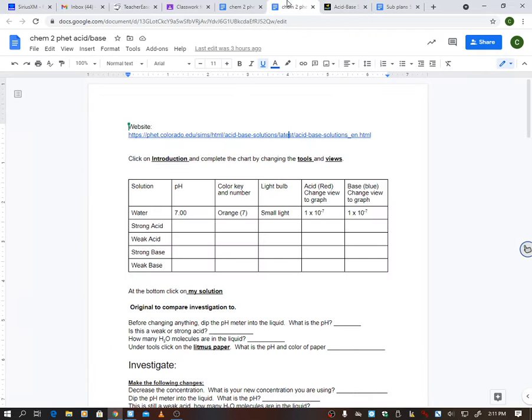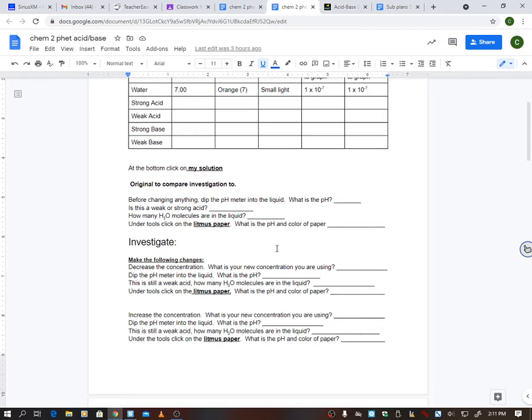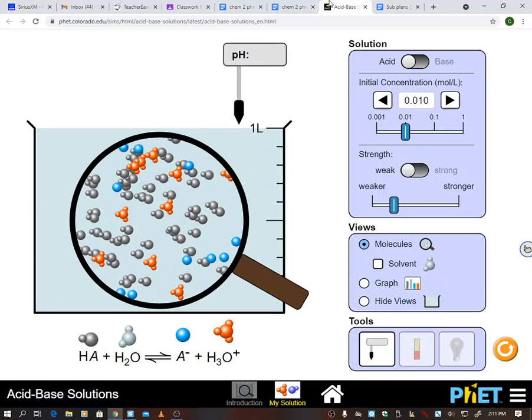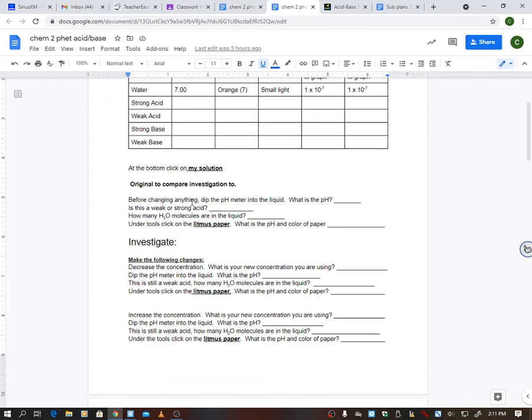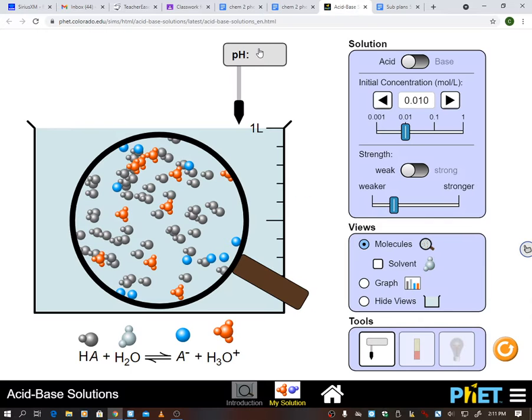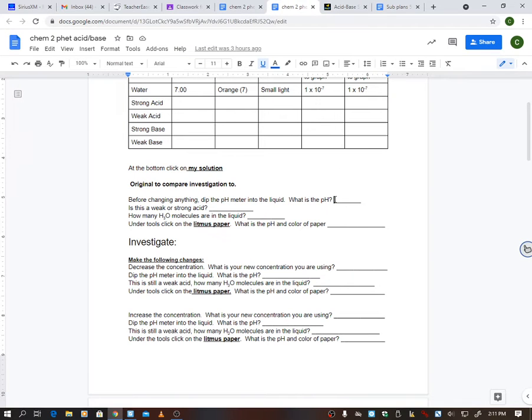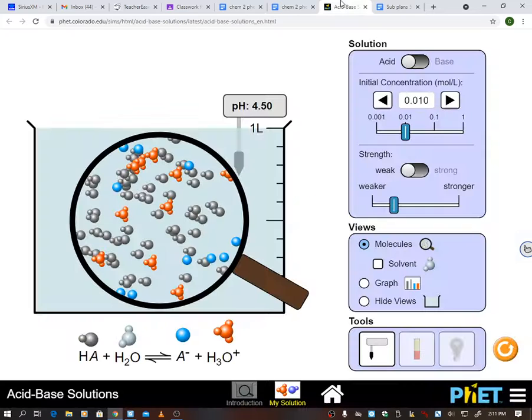All right? So I'm going to start with that. And if I look at this, it says original. This is the original data right now. That's the original data that I'm going to use to compare things to. So before changing anything, I'm going to dip the pH meter into the liquid. And it says 4.50. So that's what I would put right here in this spot, 4.50.